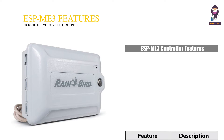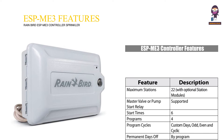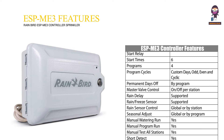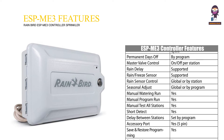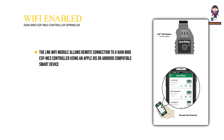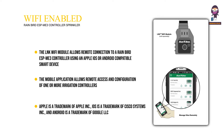ESP-ME3 controller features. Wi-Fi enabled. The LNK Wi-Fi module allows remote connection to a Rainbird ESP-ME3 controller using an Apple iOS or Android compatible smart device. The mobile application allows remote access and configuration of one or more irrigation controllers. Apple is a trademark of Apple Inc., iOS is a trademark of Cisco Systems Inc., and Android is a trademark of Google LLC.